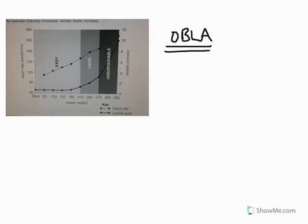We're going to look at each of the three areas of this lactate accumulation graph and heart rate graph, and interpret what trends are taking place in the stages of easy, hard, and unsustainable exercise. Starting with the easy stage.